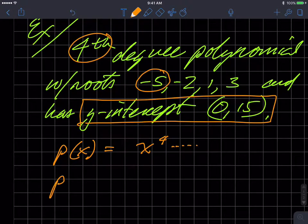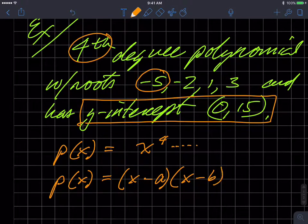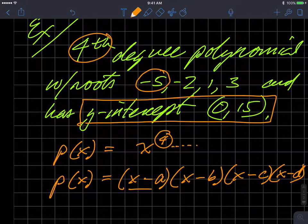And specifically, I know that my polynomial can be factored to be x minus some value, x minus some other value, x minus some other value, and x minus some other value. And because it's a fourth degree polynomial, there'll be four of these linear binomial terms.